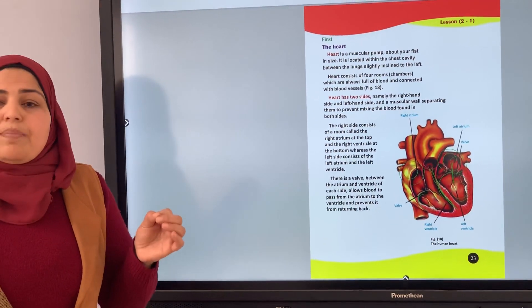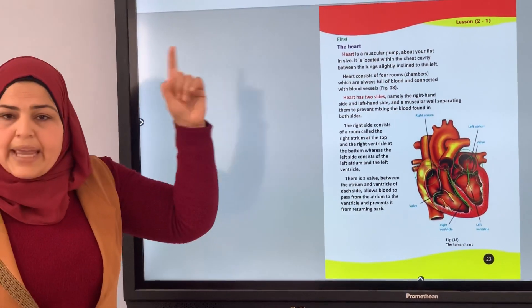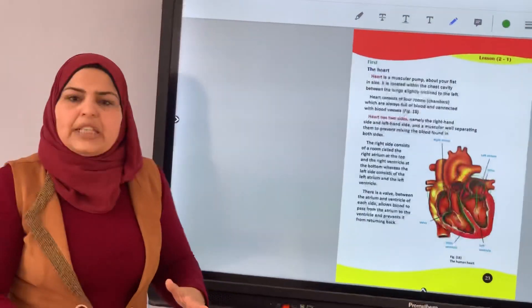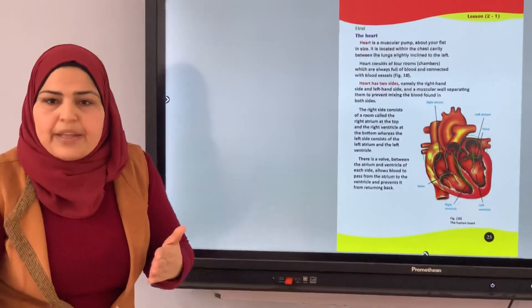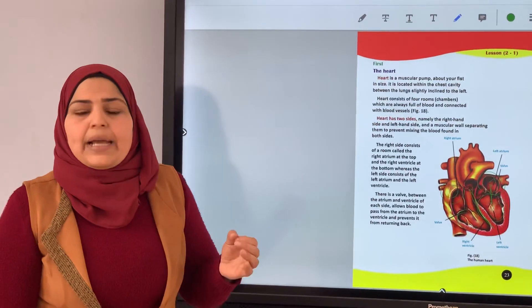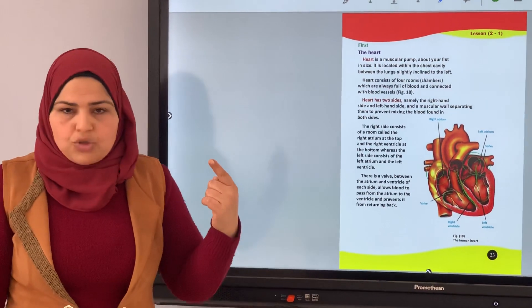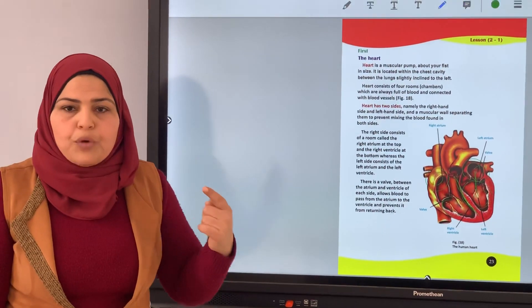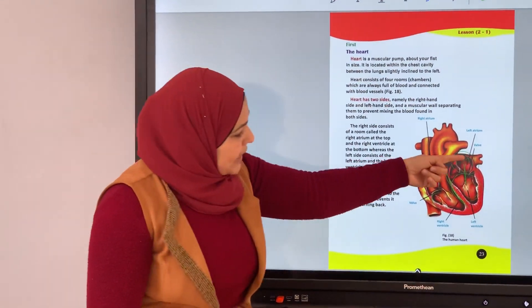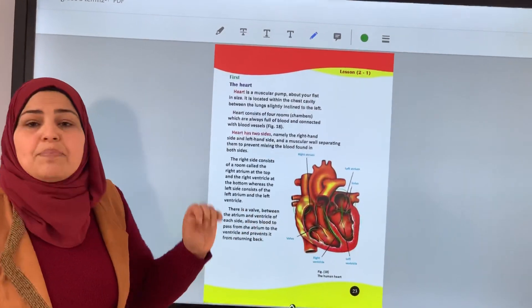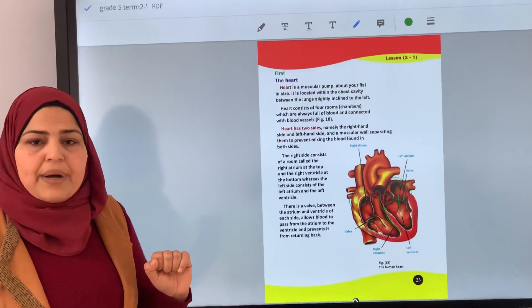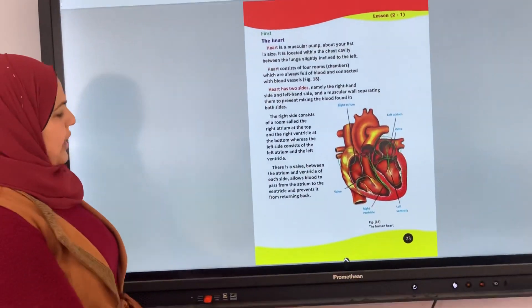The valve allows the blood to flow from the atrium to the ventricle. The valve prevents blood from returning back. This function keeps the flow of blood in one direction, from atrium to ventricle, and prevents it from returning back.